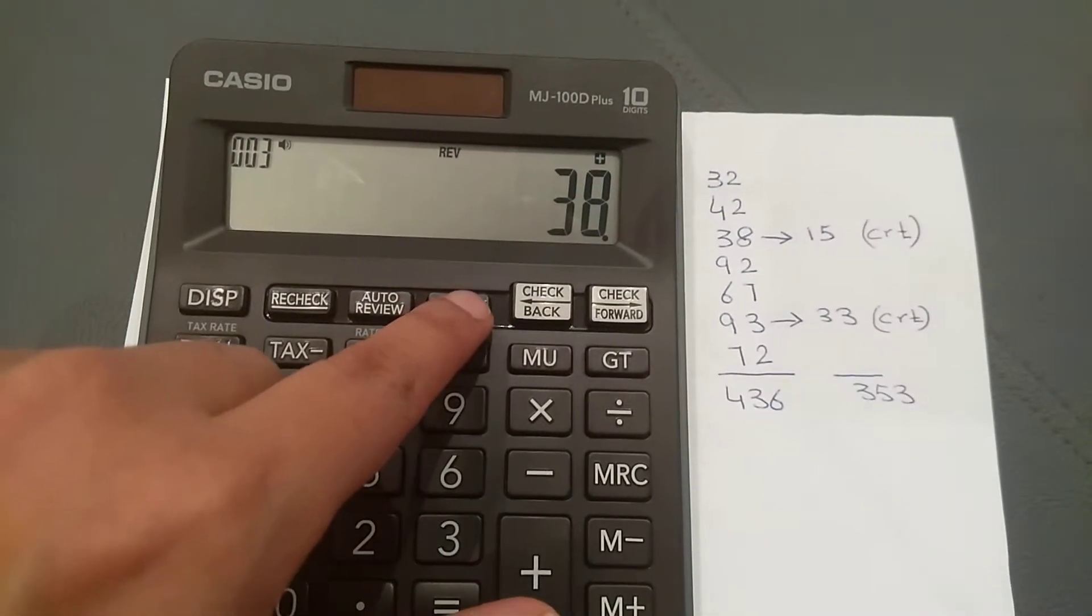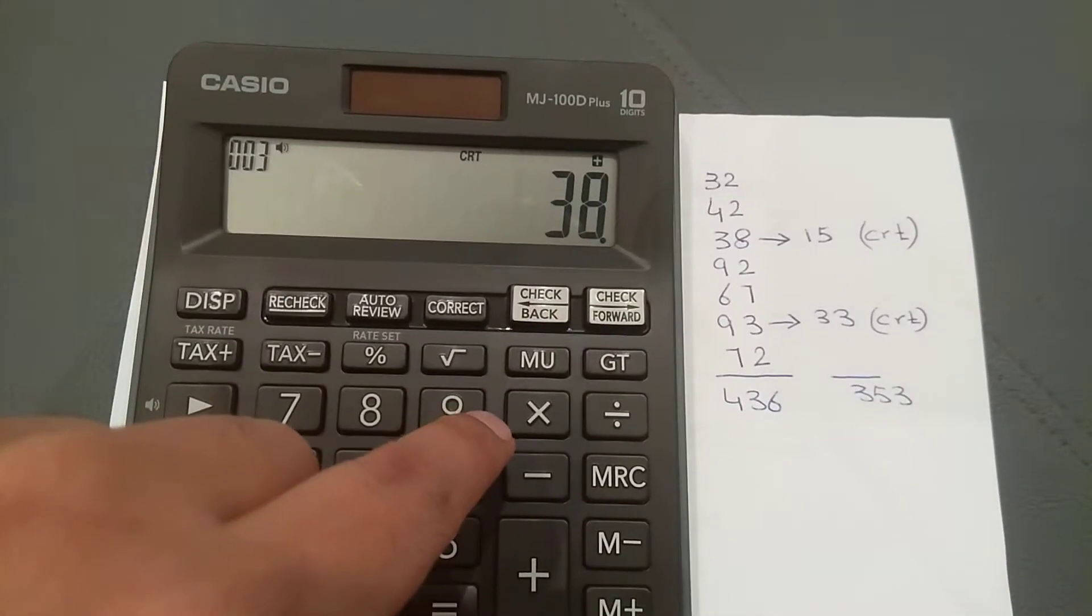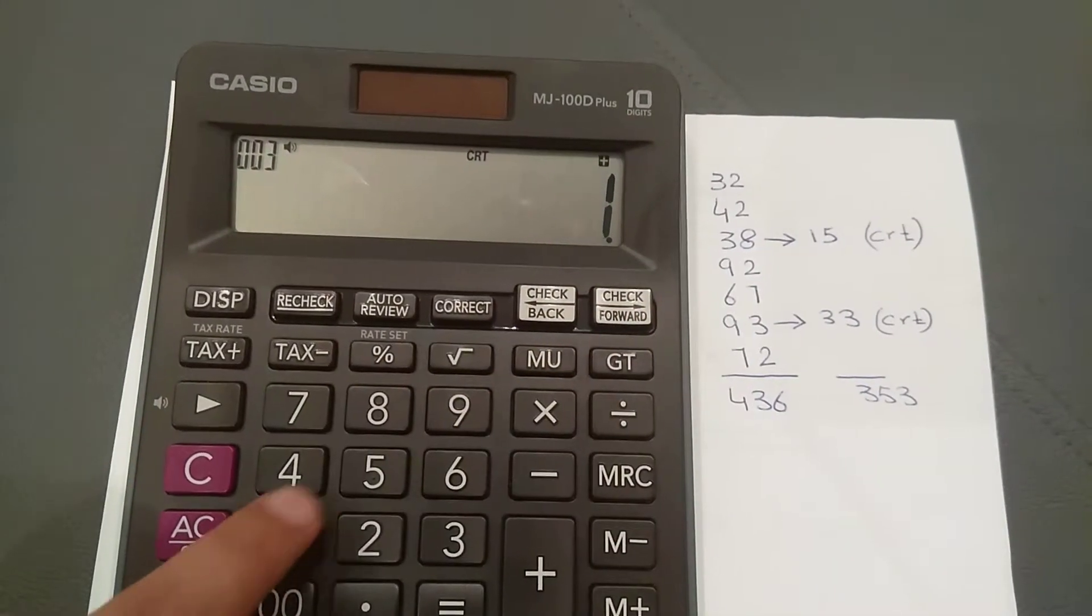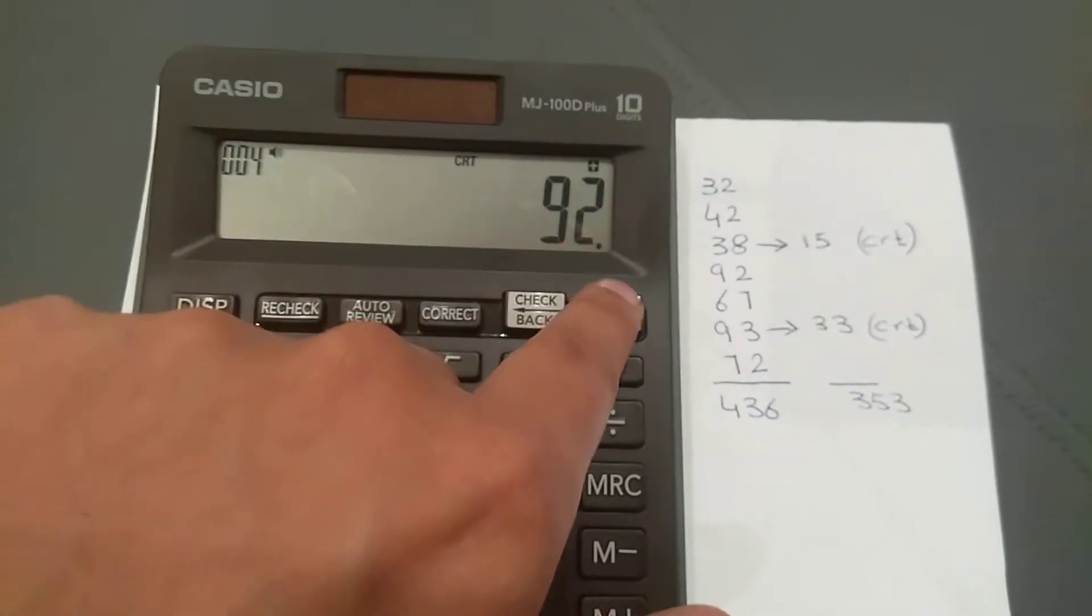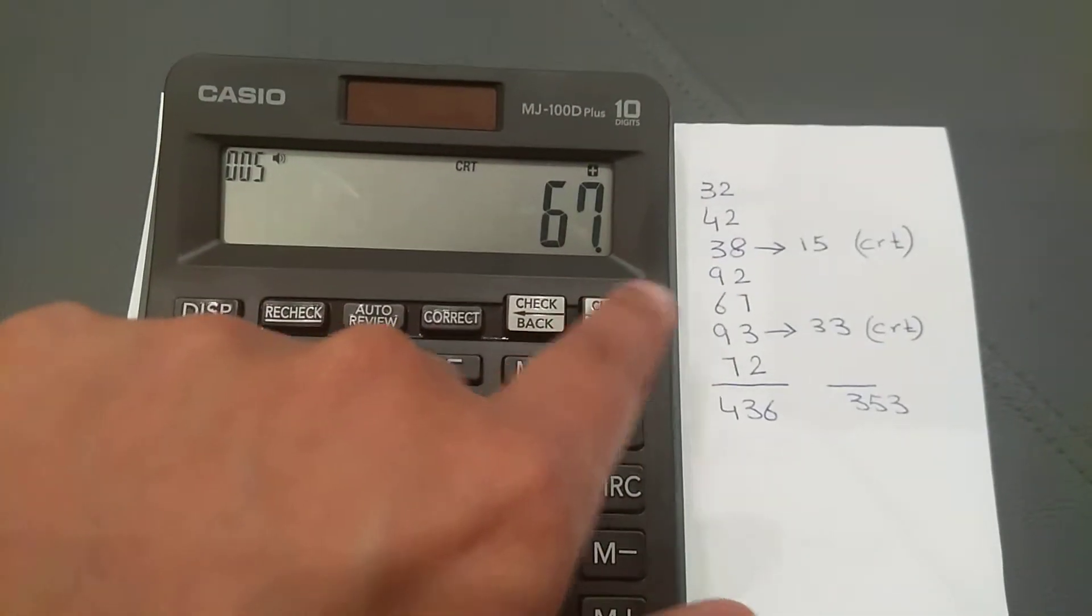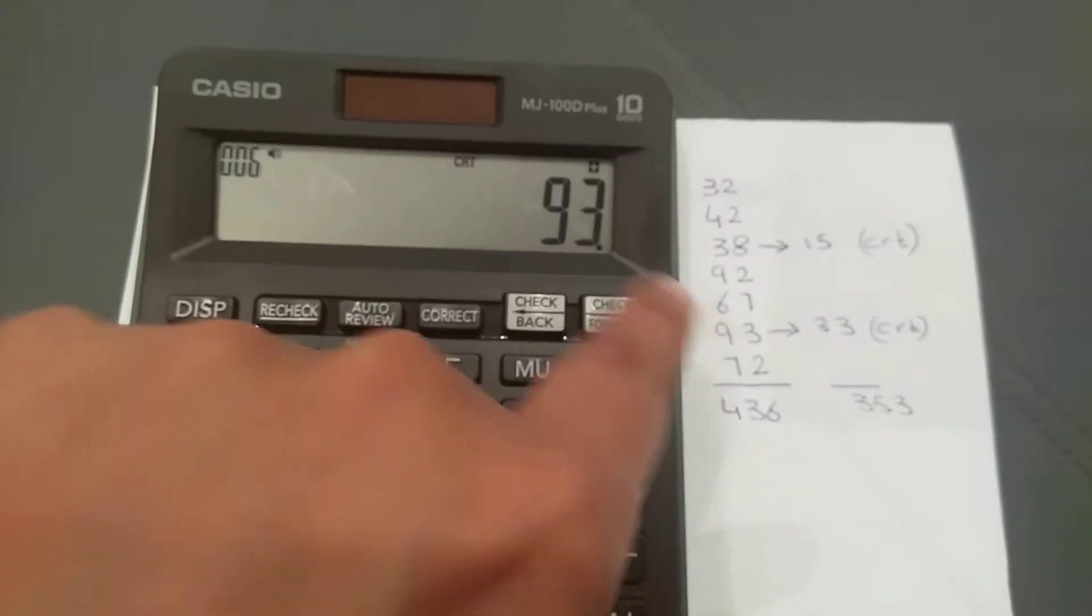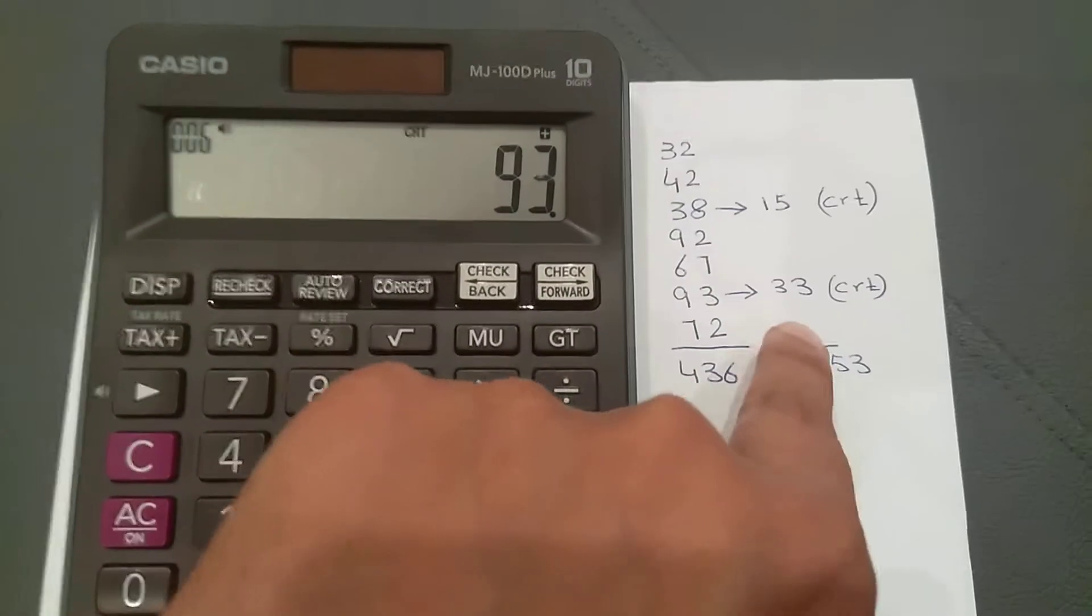I press the correct button and then enter 15. Then I move forward through 92, 67, and 93. I want to change this 93 to 33.